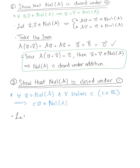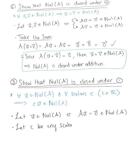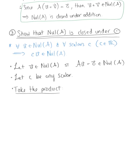Let vector u be an arbitrary vector in the null space of A such that A times u equals the zero vector, which is an element of the null space of A. Let c be any scalar. Using these initial conditions, we take the product: A multiplied by the scalar multiple c times u. By properties of matrices, we can pull the scalar c out front and consider c times the product A times u, which from our initial conditions equals c times the zero vector, which by properties of vectors equals the zero vector.